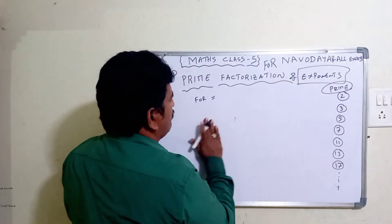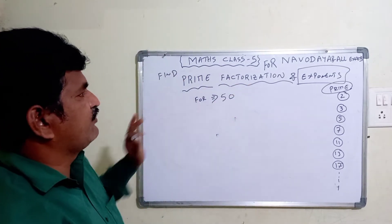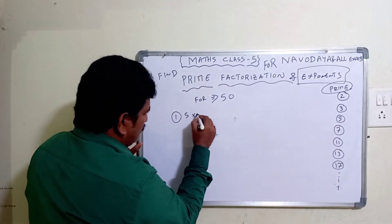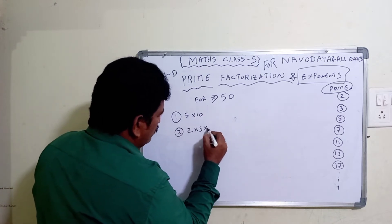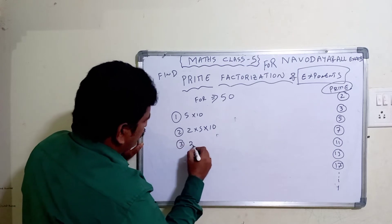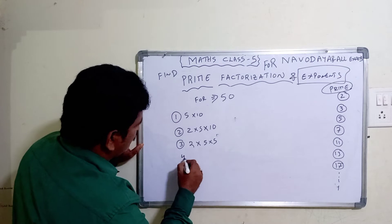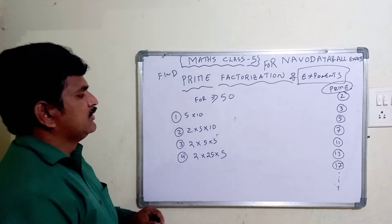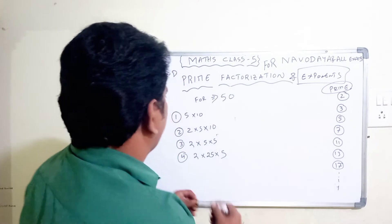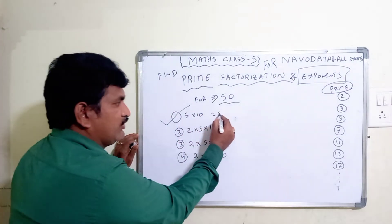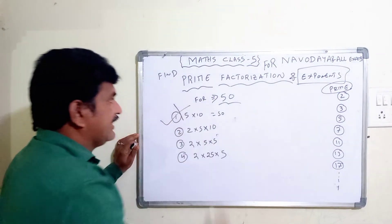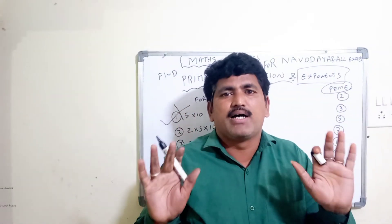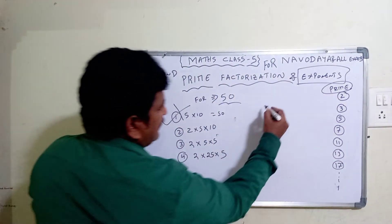Find the prime factorization form for 50. Option one: 5 × 10. Option two: 2 × 5 × 10. Option three: 2 × 5 × 5. Option four: 2 × 25 × 5. Now, 5 × 10 = 50, but that should be wrong for prime factorization form because prime factorization requires only prime numbers in the product.